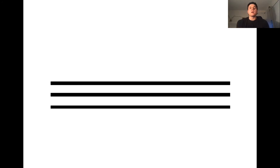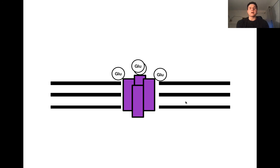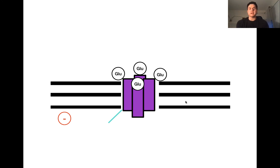Now let's apply this to the cell. Here we have our target cell with the AMPA receptor, and let's assume four glutamates are bound, so we have maximum current flow. When this receptor opens, the direction of current depends on the membrane potential. When the membrane potential is negative — as seen when the cell is at rest or hyperpolarized — current moves inward, causing the cell to depolarize. When the membrane potential is positive, current moves out of the cell, causing the cell to hyperpolarize.